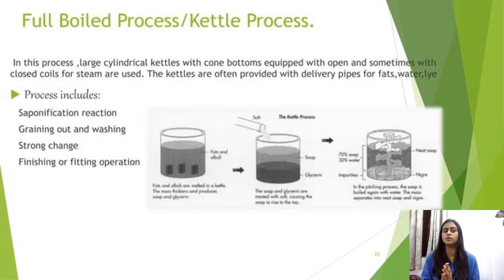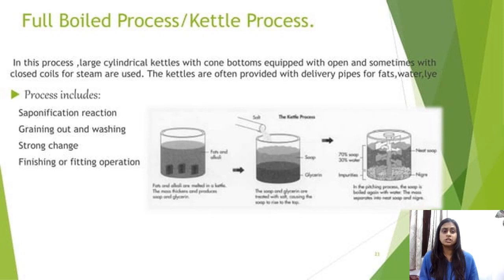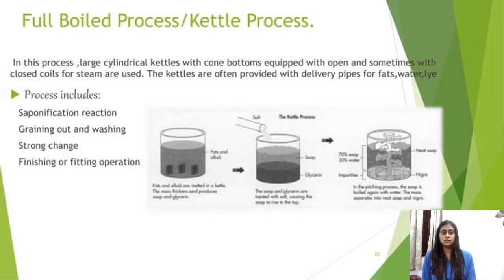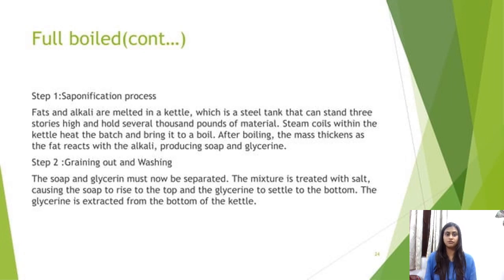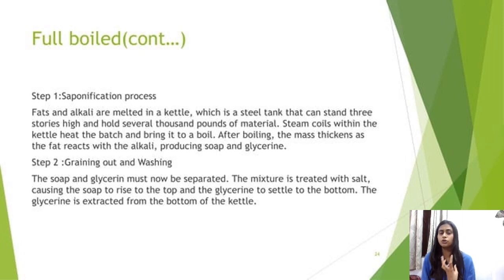The full-boiled or kettle process is the most important process used in the industry. Large cylindrical kettles with cone bottoms — sometimes open, sometimes with closed coils — with steam are used. The kettles are provided with delivery pipes for fats, water, lye, etc. The process includes four steps: saponification, graining out and washing, strong change, and finishing or pitching operation. In step one, fats and alkalis are maintained in a kettle — a steel tank that can be three stories high holding several thousand pounds of material. Steam coils heat the batch and bring it to a boil. After boiling, the mass thickens as the fat reacts with the alkali producing soap and glycerin.